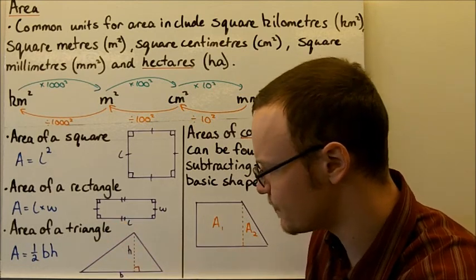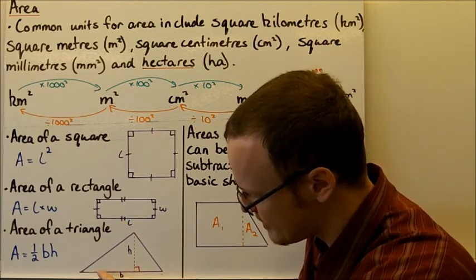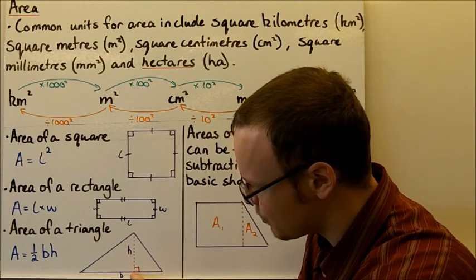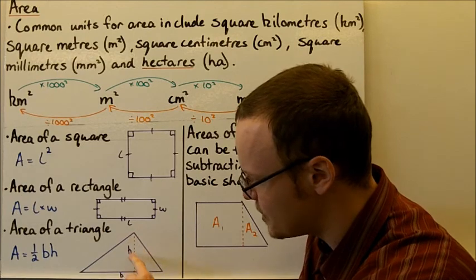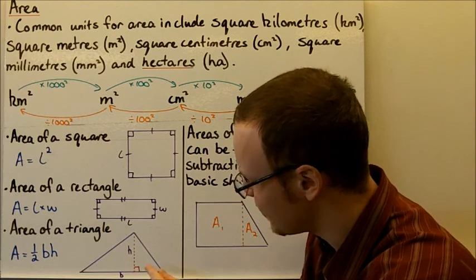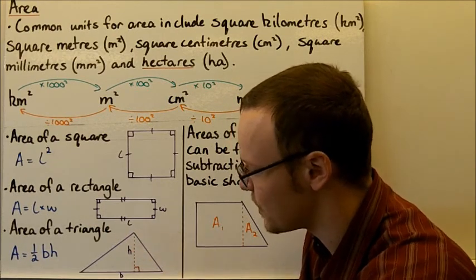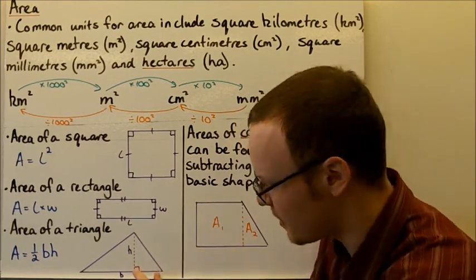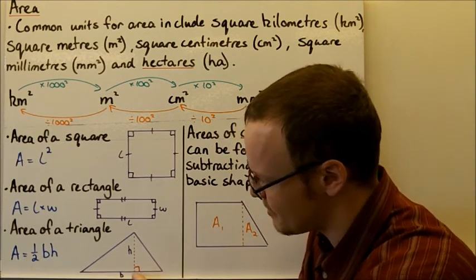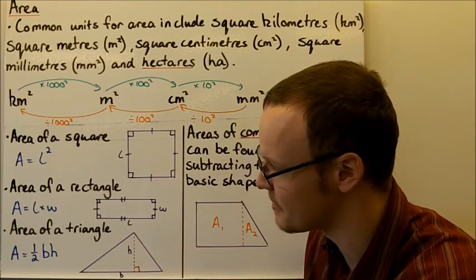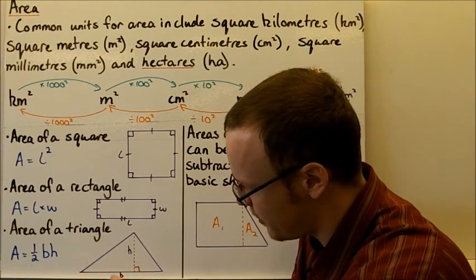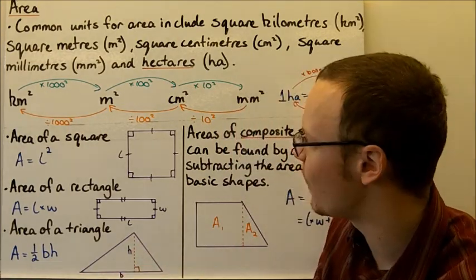For the area of a triangle: if we have the base B along the bottom, and draw a line perpendicular from the base up to the top of the triangle, that is the perpendicular height. It's called the perpendicular height because it is at right angles to the base. The area of the triangle is one half multiplied by the base, multiplied by the perpendicular height.